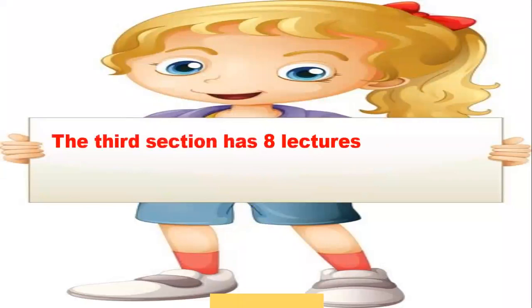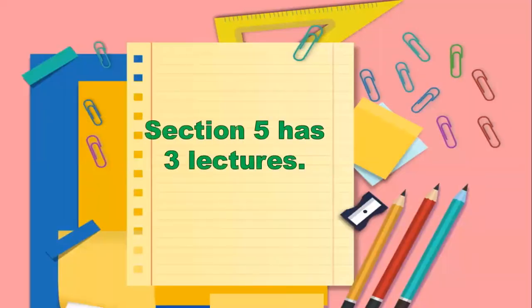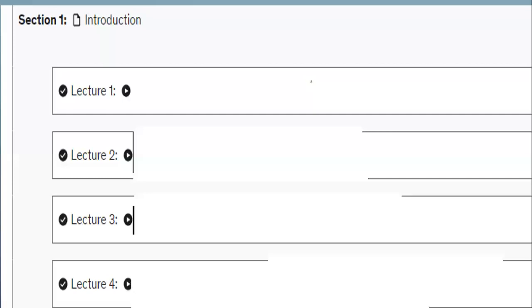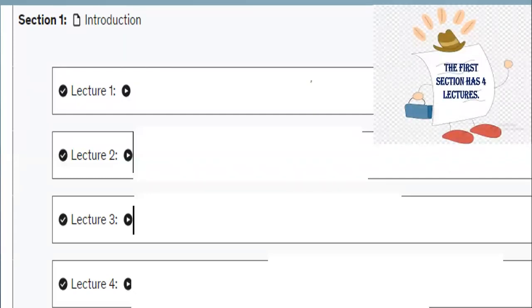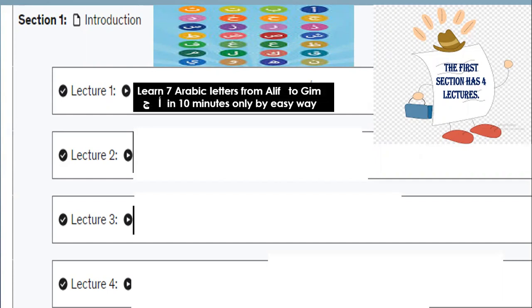The third section has eight lectures. The fourth section has two lectures. The fifth section has three lectures. The last section has four lectures. In the first section you will learn the Arabic letters — the number of the Arabic letters, the name of each letter, the shape of each letter, and how to write each letter. In the first lecture you will learn seven Arabic letters from Aleph to Jim in 10 minutes only.